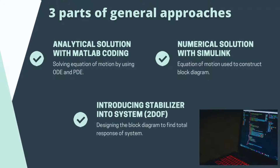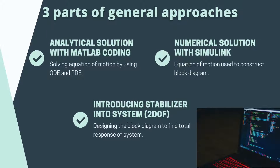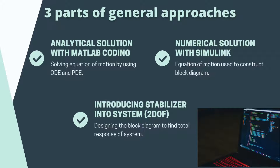We will now talk about the three parts of our general approach. The first is an analytical solution using MATLAB coding, where the analytical solution is determined by solving the equation of motion using ODEs and PDEs. The second part is a numerical solution using Simulink, where the equation of motion is used to construct a block diagram, and the percentage difference between analytical and numerical solutions is calculated to ensure credibility. The last part introduces the stabilizer into a two-degree-of-freedom system by designing a block diagram to find the total response of the system.